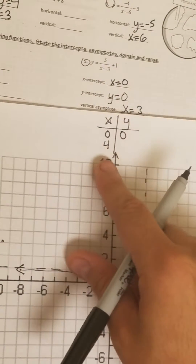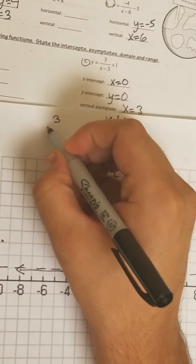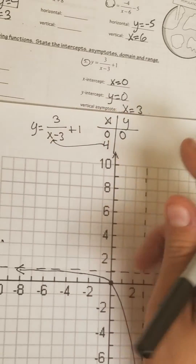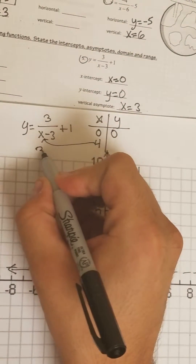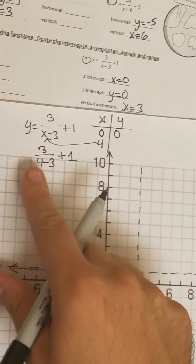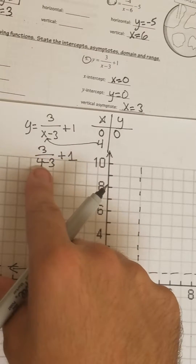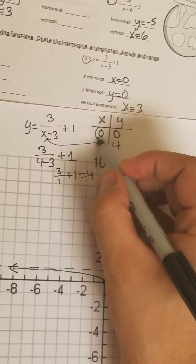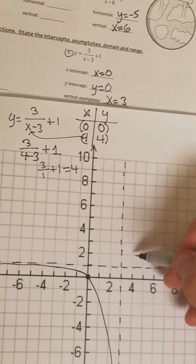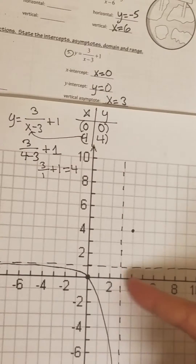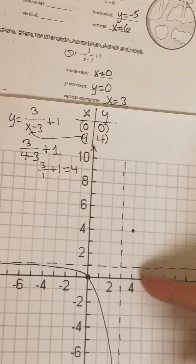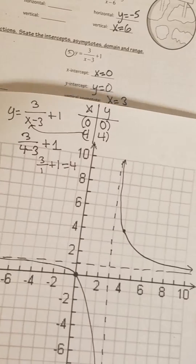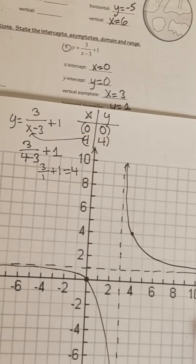So now we're going to plug 4 into our original: y equals 3 over x minus 3 plus 1. So we would get 3 over 4 minus 3 plus 1 — that'll be 3 divided by 1 plus 1, which is going to be 4. So we got 4 comma 4 as our ordered pair. Now we know that it's above this line, so we know it behaves like this. So now we can go ahead and graph that. There's our graph — it looks like an hourglass shape hyperbola.